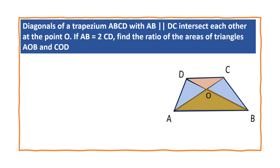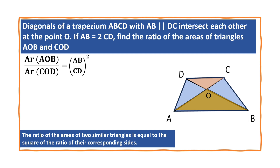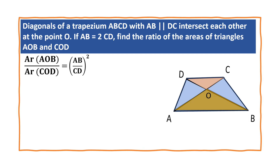Now we can find the ratio of the areas of triangle AOB and COD. Area of triangle AOB by area of triangle COD is equal to (AB/CD) squared. The ratio of areas of two similar triangles is equal to the square of the ratio of their corresponding sides. Here, the corresponding sides are AB and CD. We are given that AB is equal to 2CD, so substituting 2CD for AB, CD and CD cancel out.